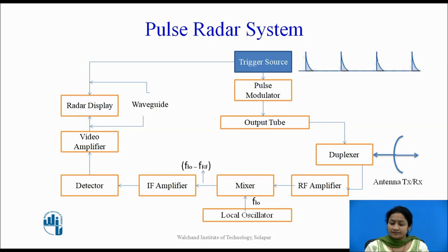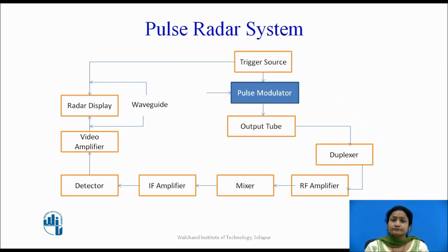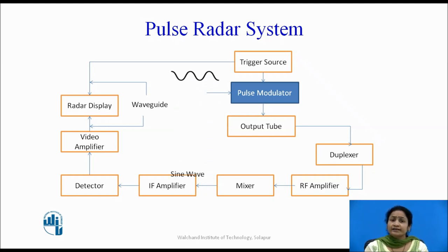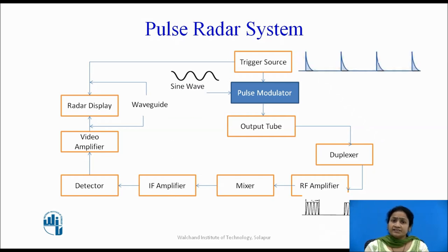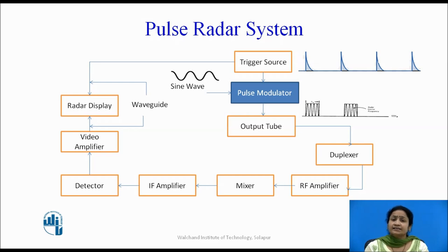The pulse modulator consists of two inputs. One is the sine wave, where the sine waves are modulated by the pulses generated by the trigger source. The pulse modulator outputs rectangular pulses which are modulated by the sine wave.